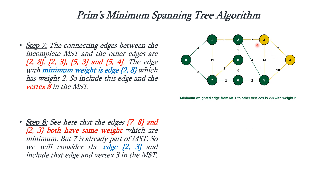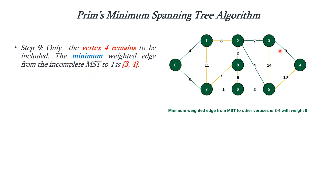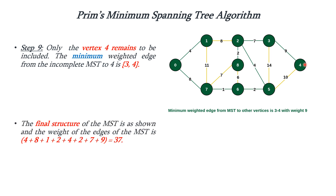Now the possibilities are: connect 2 to 3, 5 to 3, or 5 to 4. Among these, 2 to 3 has weight 7, 5 to 3 has weight 14, and 5 to 4 has weight 10, so 7 is minimum. We are including 2 to 3 into the MST. Next we can either connect 3 to 4 or 5 to 4; connecting 5 to 3 would form a cycle so it's excluded. Among 3 to 4 (weight 9) and 5 to 4 (weight 10), 3 to 4 is minimum, so we include it. The final structure of the MST is shown.